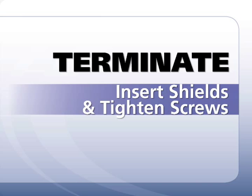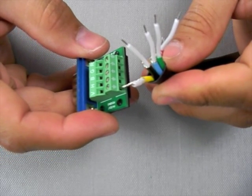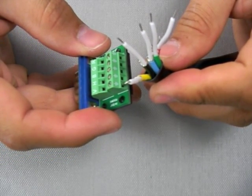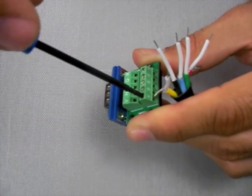Start at one end of the connector by inserting the first shield or ground wire. While holding the shield in place, tighten the screw completely and make sure the shield is secure.